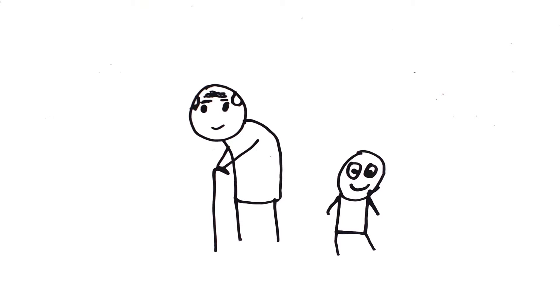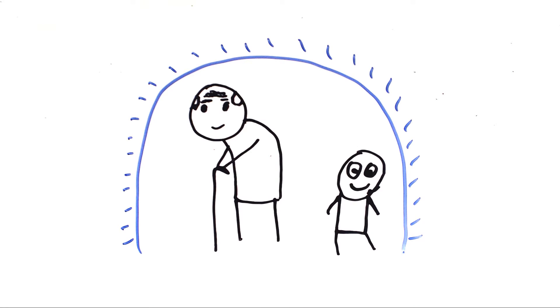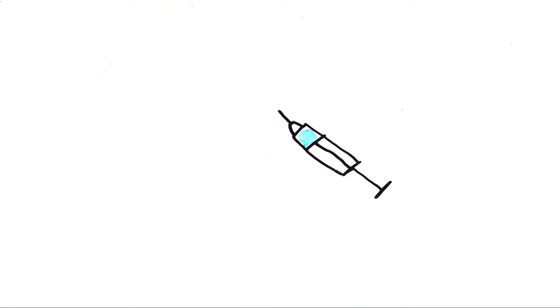This is where immunization comes in. Immunization is a process to make a person immune or resistant to an infectious disease. To do this, we use vaccines. Vaccines contain a weakened or altered form of the pathogen, and this allows us to be safely exposed to that pathogen.